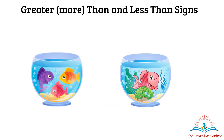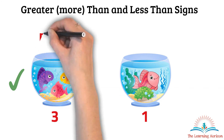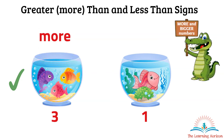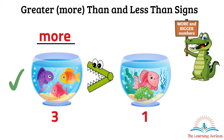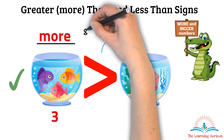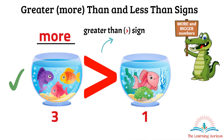Let us understand this with examples. We have 2 fish bowls. Here we have 3 fishes and here we have 1. This fish bowl has more fishes than the other. Since our alligator is hungry, he will feed on more and bigger numbers — so the hungry alligator will eat these fishes because they are more. The sign shown is the greater than sign. We can also say 3 is greater than 1.